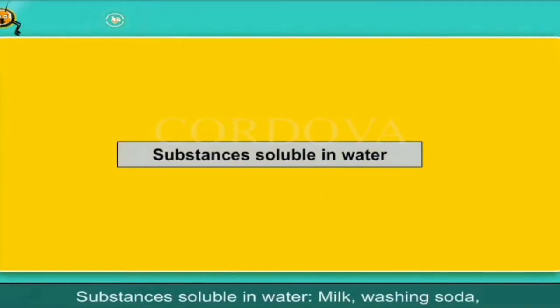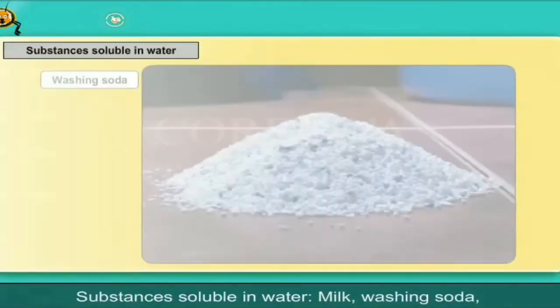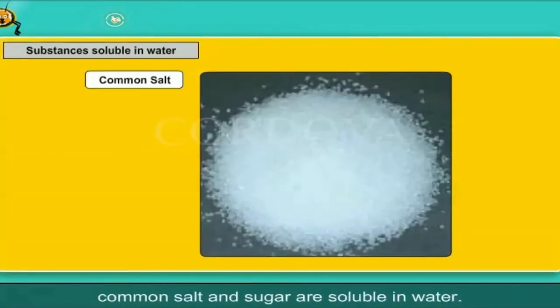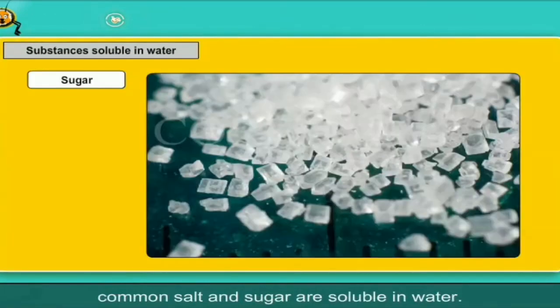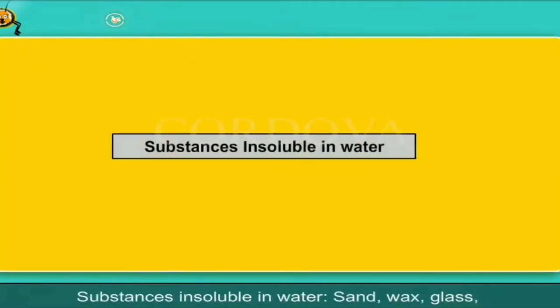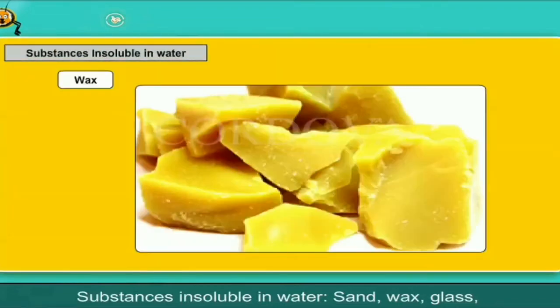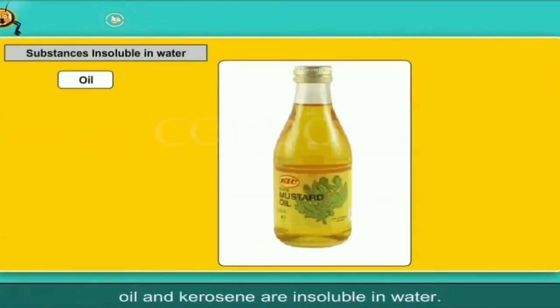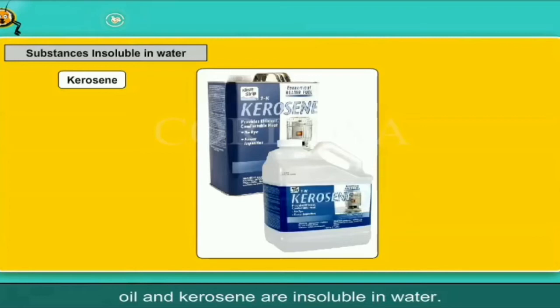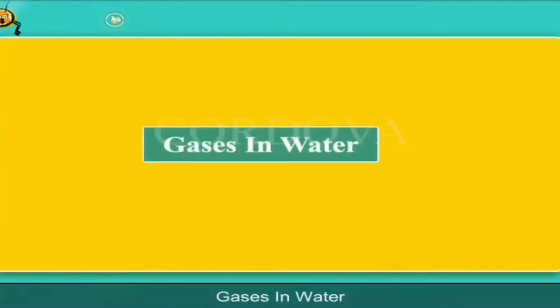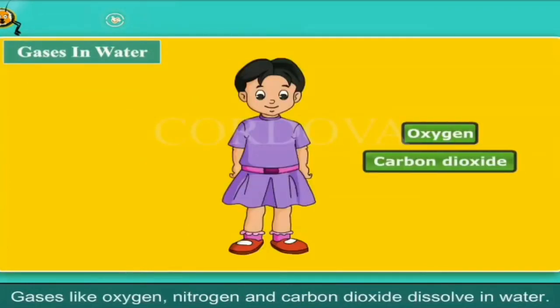Substances soluble in water: milk, washing soda, common salt and sugar are soluble in water. Substances insoluble in water: sand, wax, glass, oil and kerosene are insoluble in water. Gases in water: gases like oxygen, nitrogen and carbon dioxide dissolve in water.